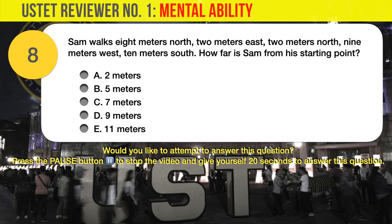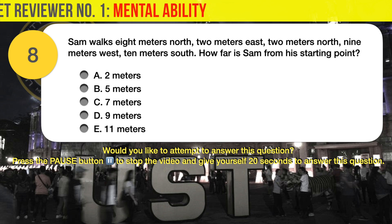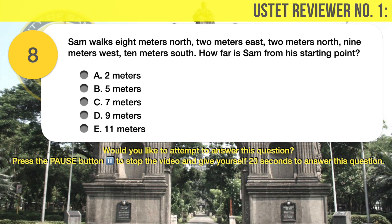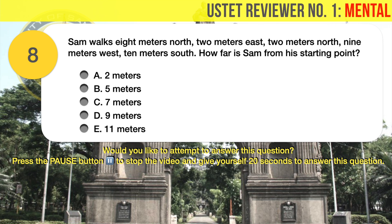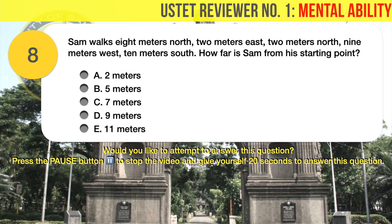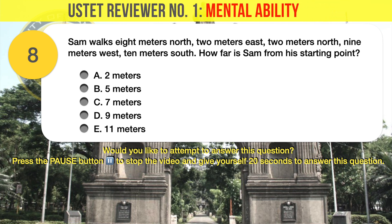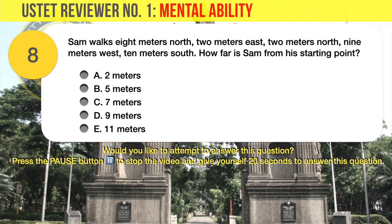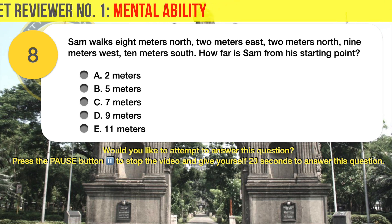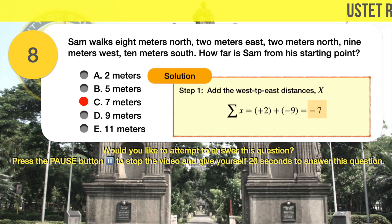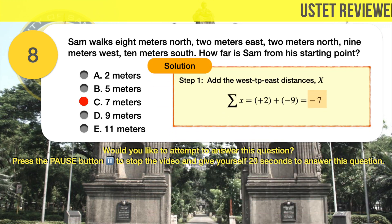Question number 8. Sam walks 8 meters north, 2 meters east, 2 meters north, 9 meters west, 10 meters south. How far is Sam from his starting point? A. 2 meters, B. 5 meters, C. 7 meters, D. 9 meters, E. 11 meters. The correct answer is C, 7 meters.